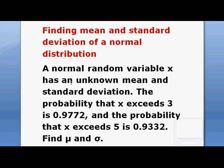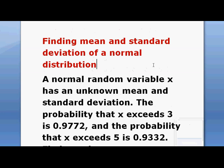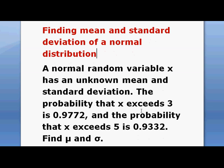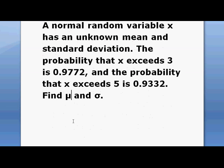Hello, let us learn how to find the mean and standard deviation of a normal distribution. The question is: the normal random variable x has an unknown mean and standard deviation. The probability that x exceeds 3 is 0.9772 and the probability that x exceeds 5 is 0.9332. Find mu and sigma, that is, mean and standard deviation.